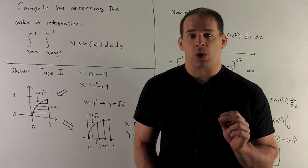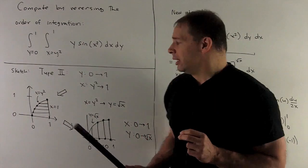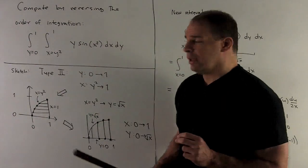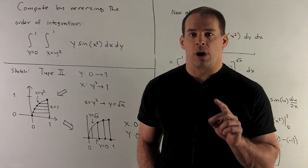Next, I have x going from y squared to x equals 1. x equals 1 is just a vertical line through 1. Then x equals y squared, which you could solve for y to get y equals the square root of x.